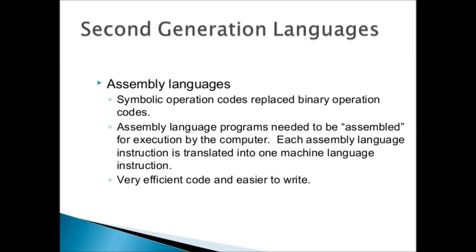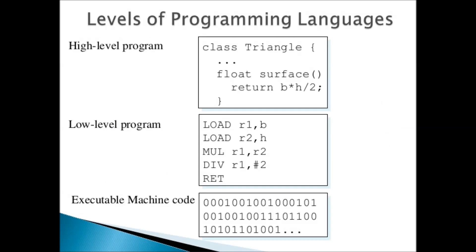Next is the second generation language, also known as assembly level language. Assembly level language uses codes known as mnemonic codes. As you can see in the figure, there are words like LOAD, MUL, DIV, RET, ADD, SUB — these mathematical words were used in second generation language, known as mnemonics. Assembly level language was comparatively easier than machine level language, but it is still considered a low-level language because it is machine dependent.